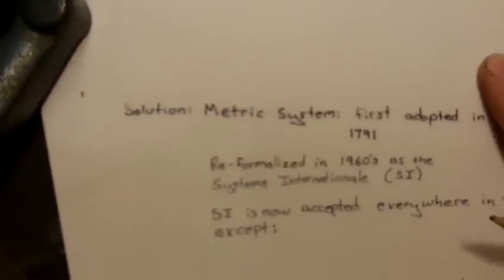So for a couple hundred years, the metric system was developed. It tended to fragment. There was a lot of different views of the metric system. In the 1960s, they reformalized it and renamed it as the Systeme Internationale or the SI system. So the SI system is now accepted everywhere in the world except for three countries.